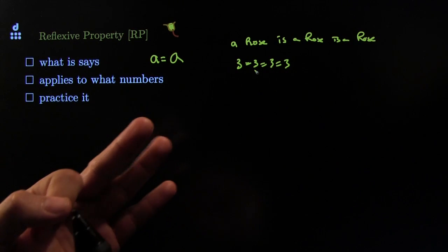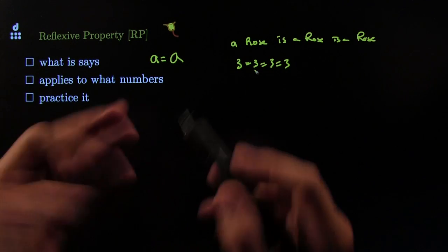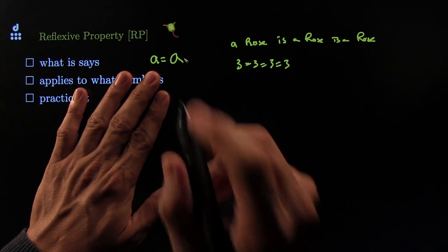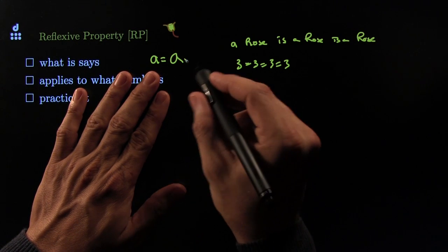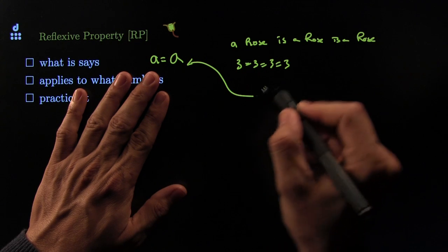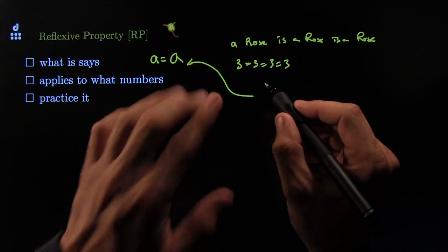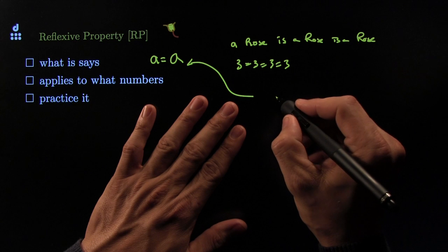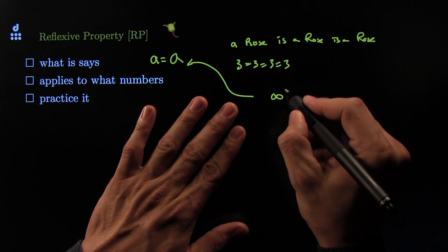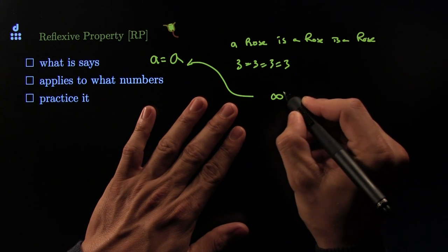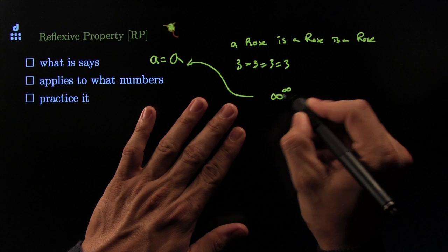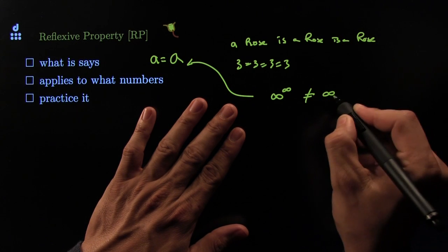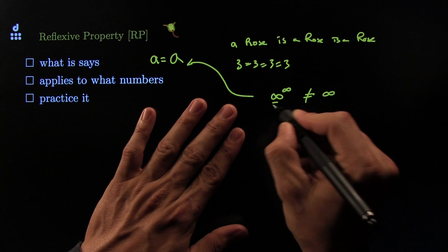This applies to numbers, variables, terms — all the things in our class. The number is equal to itself. It's interesting to note that may not be true in future classes. If you pay more money you may take a class where there's a number called infinity, and sometimes infinity raised to infinity gets ridiculously big — it may not even be the same as a regular infinity, although it's still equal to infinity.